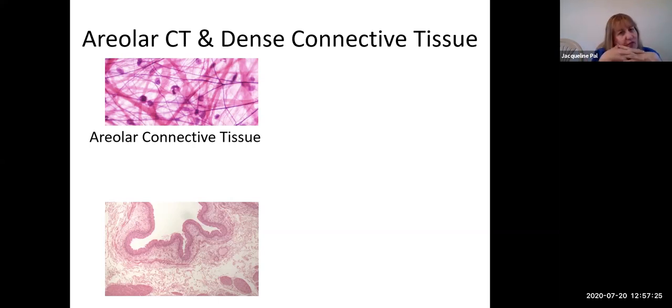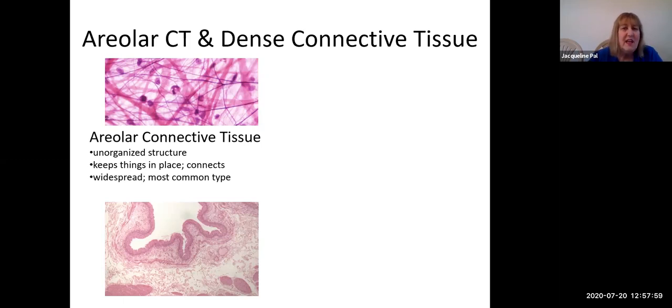This is the most widespread throughout your body. You can clearly tell it's connective tissue - it's got a scattering of cells but it's mostly not cells. There's a lot of space in the tissue, like the inside of a lady's purse, super disorganized. However, this one keeps things in place, it connects tissue. Between your skin and your muscle you're going to have areolar connective tissue surrounding everything, and because of that it is by far the most common type.